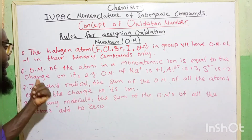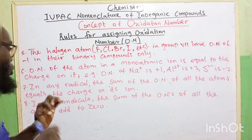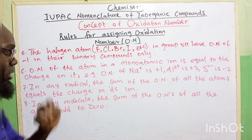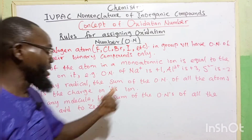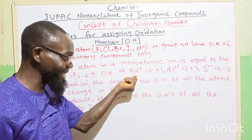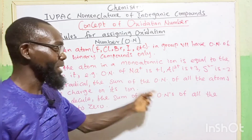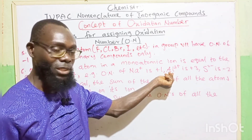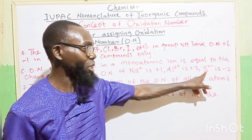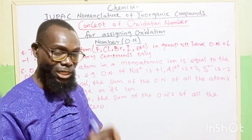Six: the oxidation number of an atom in a monoatomic ion is equal to the charge on it. Monoatomic ion — the word mono means one — like sodium ion: the oxidation number of sodium in this state is plus one, which equals the charge on it. Like aluminum three-plus, the oxidation number equals the charge on it, which is plus three. Likewise, sulfide ion is going to be equals to minus two.